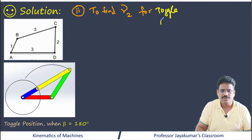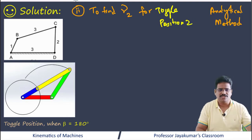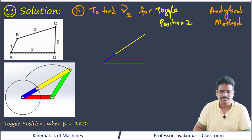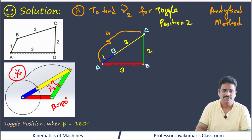Now I can find the transmission angle for toggle position 2. Let me draw the conceptual diagram for this configuration and determine the required angle.